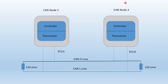Both lines are terminated by a termination resistor of 120 ohms. If you want to attach your node to the bus, you just have to connect the CAN H terminal of your node to the CAN H line of the bus, and the CAN L terminal of your node to the CAN L line of the bus.